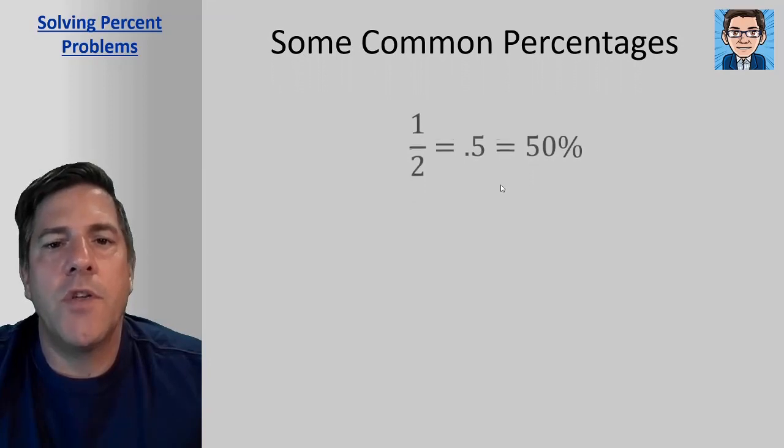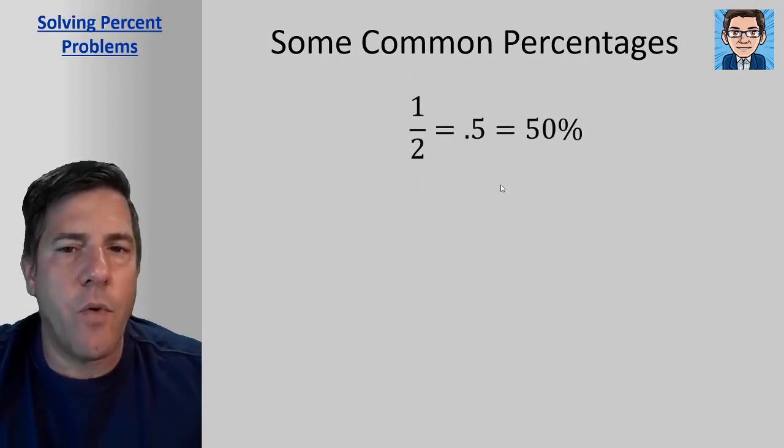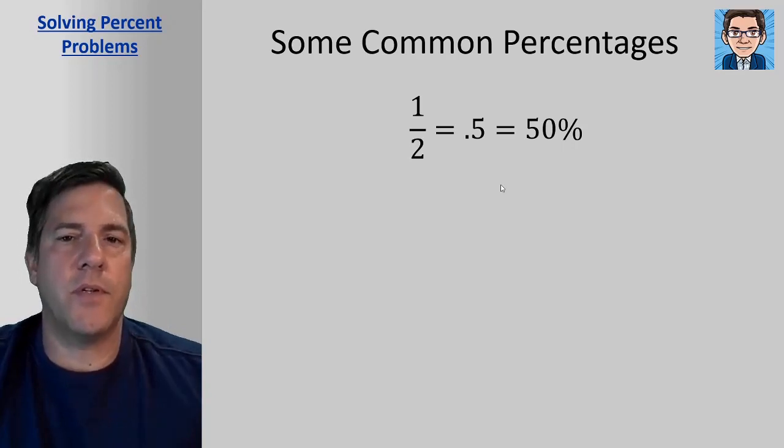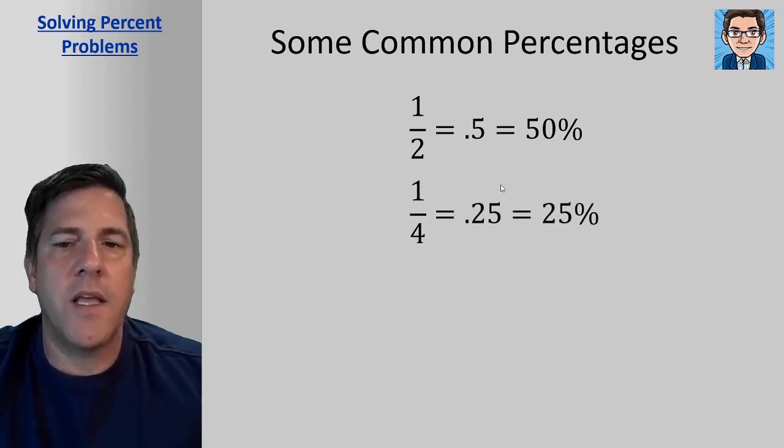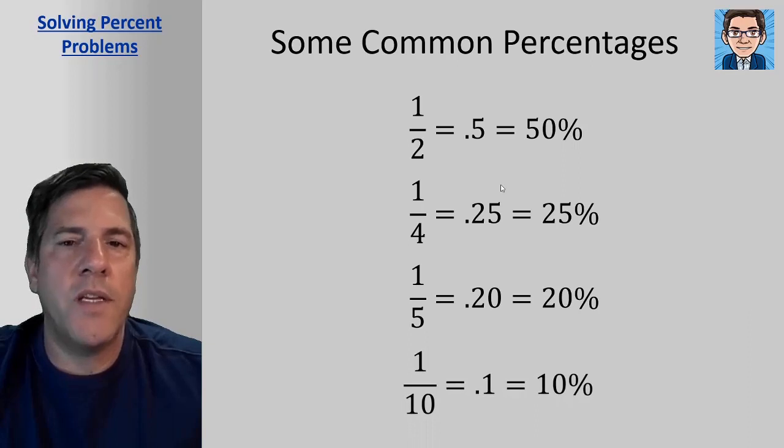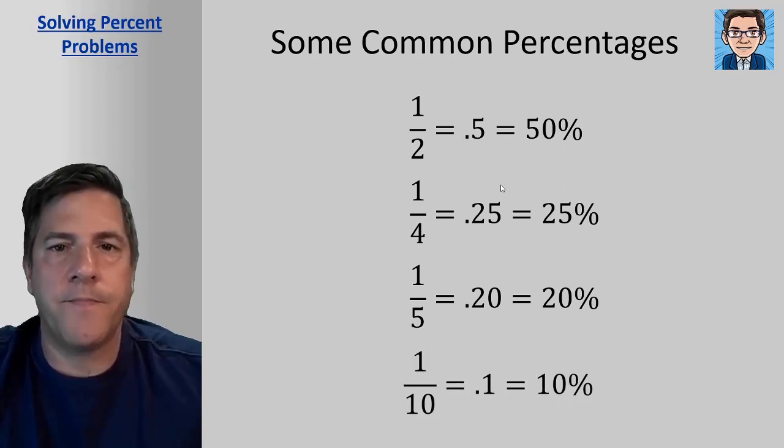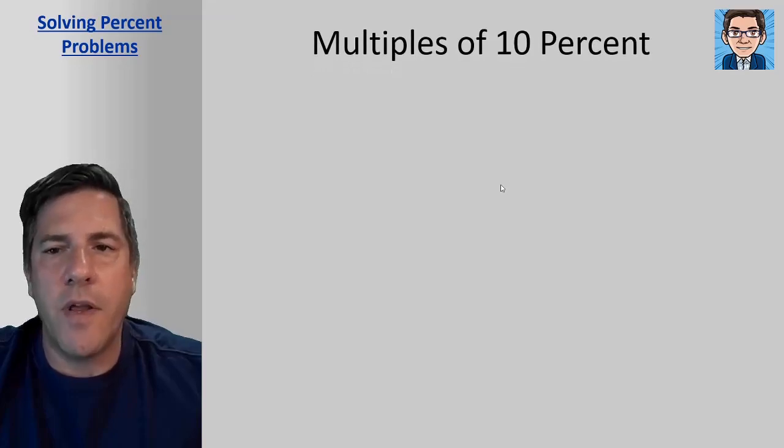So just to go over some common percentages, just knowing these will help you solve things a little easier. One half or 0.5 is the same as 50%. One fourth or 0.25 is the same as 25%. One fifth is the same as 20%, and then one tenth is the same as 10%.